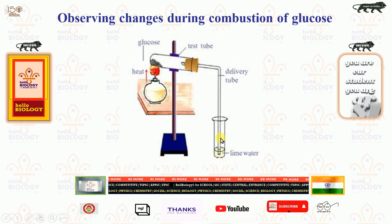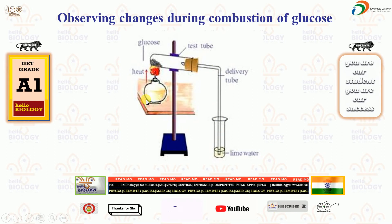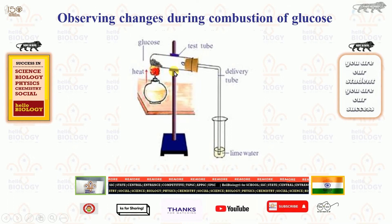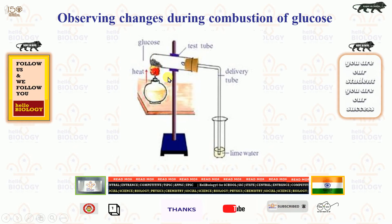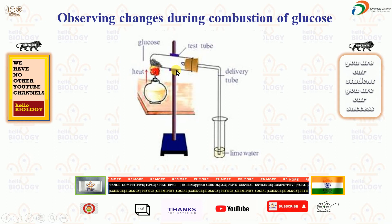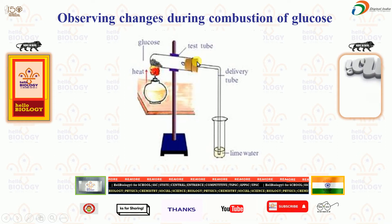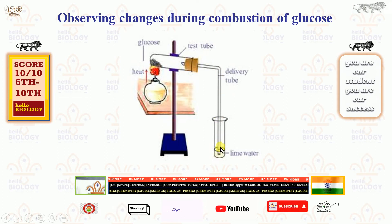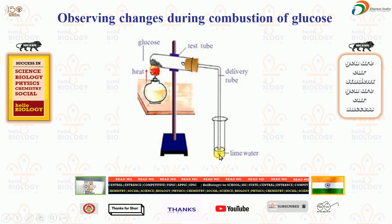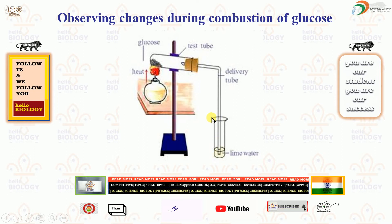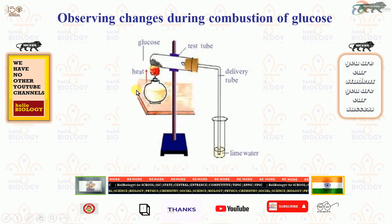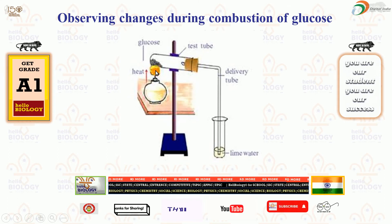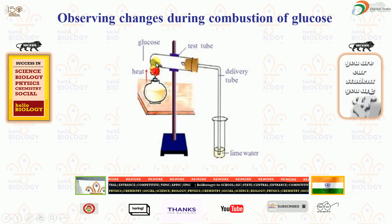Parts are important. Next, the heating process — first we need to add sugar into the test tube and fix it to the stand with the help of clamps. After fixing it, we insert the one-hole rubber cork, then the delivery tube, which must be inserted into the lime water contained in the test tube.